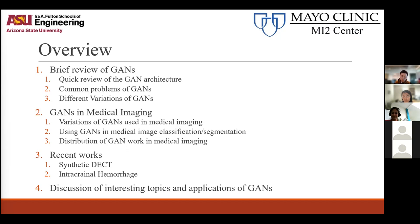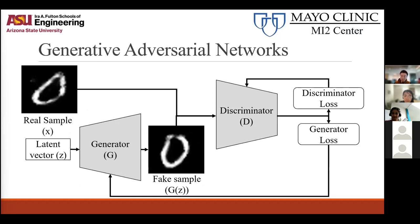So I'll briefly review GANs. This is the classic GAN architecture in which we have two networks, the generator and discriminator, that are adversarially competing against each other. The generator aims to generate images from random noise that look like they came from the real distribution, while the discriminator aims to discriminate if the sample is real or fake. This adversarial training allows us to train a generator that can generate realistic images. It's more of a framework of competing networks than a specific architecture, and it's very powerful.